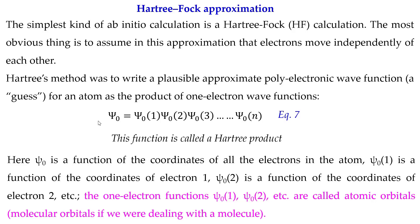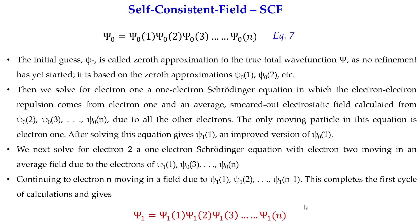Here psi_0 is a function of the coordinates of all electrons in the atom. Psi_0(1) is a function of the coordinates of electron 1, and psi_0(2) is a function of the coordinates of electron 2. These one-electron functions psi_0(1) and psi_0(2) are called atomic orbitals, or molecular orbitals if we are dealing with a molecule. This psi_0 is the initial guess wave function — the zeroth approximation to the true wave function — because no refinement has yet been applied.